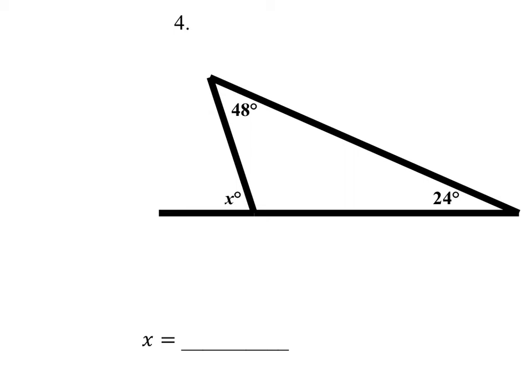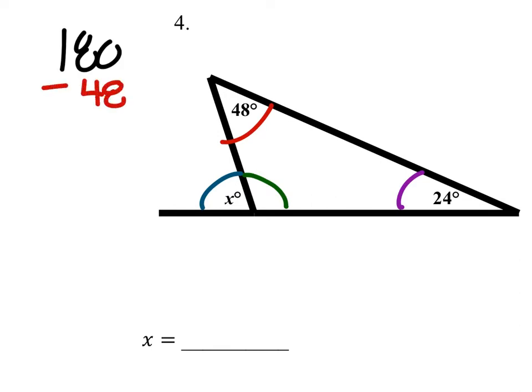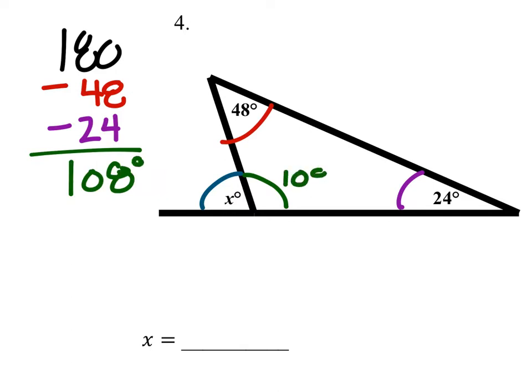Number four — we're going to do this a little bit more complicated. We've got this 48-degree angle, and we also have the 24-degree right here. What we could do is solve for this angle, which we can see is a straight angle pair with the angle they really want us to find. So to solve for the green one, we're going to take the 180, subtract 48, and then subtract 24 as well. That gives us the green one: 108 degrees — a nice obtuse angle.